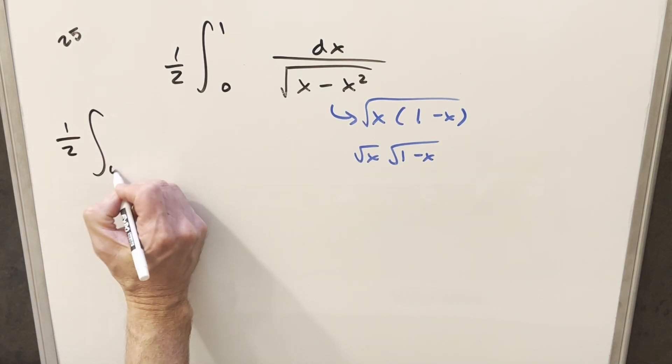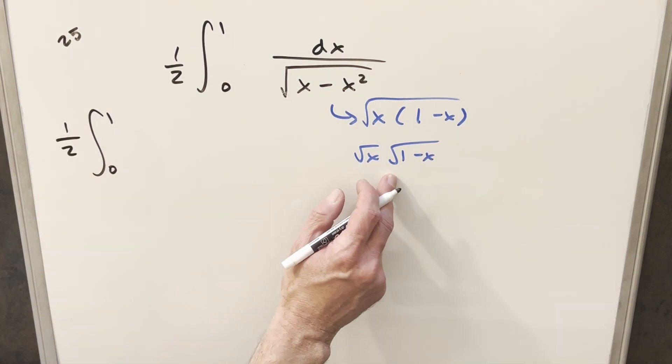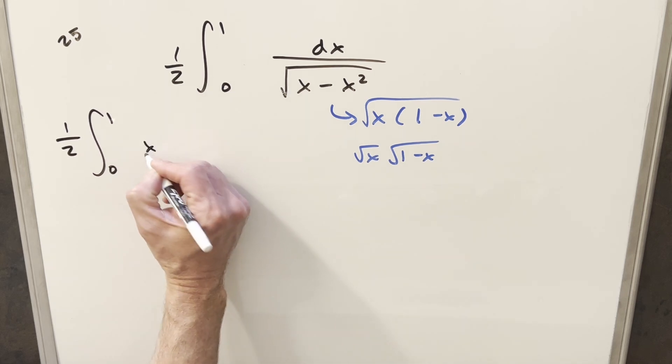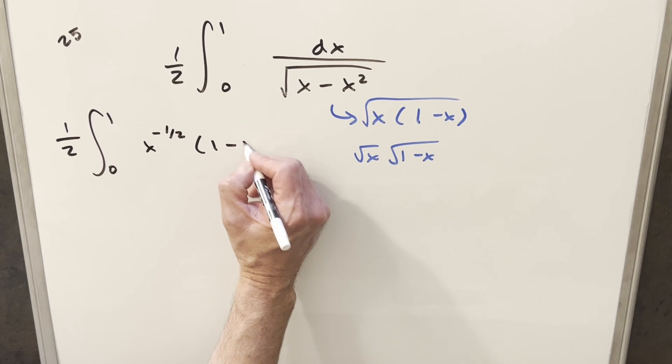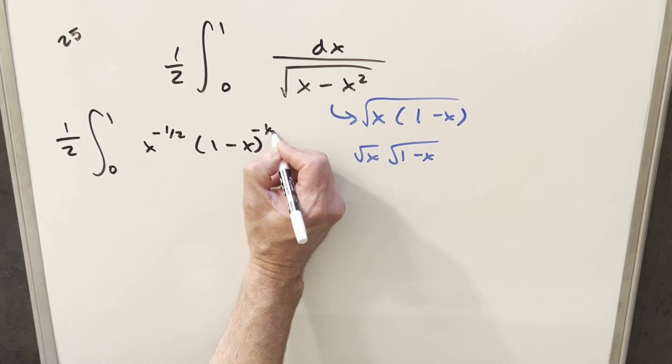And then I'll just go ahead and rewrite this. We'll have this going from 0 to 1. But actually, what I want to do is take this, bring it into the numerator. And I'll write the first term as x to the minus 1 half. And we'll write the second term as 1 minus x to the minus 1 half.